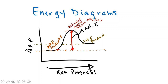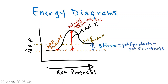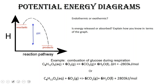The difference between the potential energy of the products and the reactants is going to be our delta H of the reaction. From our previous video, we stated that the delta H of the reaction is the potential energy of the products minus the potential energy of the reactants. Let's take a look at the difference between endothermic and exothermic reactions.